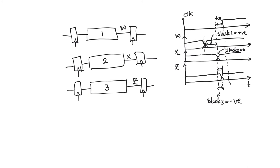So what does it mean that path three has negative slack? First of all, it means that the value at Z will not be registered properly. For a value to be registered properly we have to respect the setup time — that is how a register works. If the input changes at or before setup time before the active edge, then the output will change exactly T_cq after the active edge. If we do not respect the setup time and allow the input to change closer to the active edge than setup time, then we have a setup time violation. Negative slack is synonymous with setup time violation. At a fundamental physical level, the output register of path three will not have enough time for its input Z to be latched properly in the master latch, and the output after T_cq is going to be wrong.